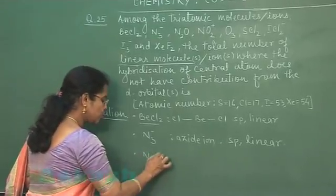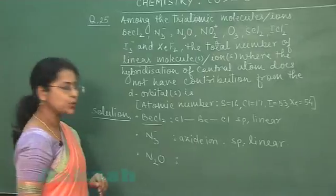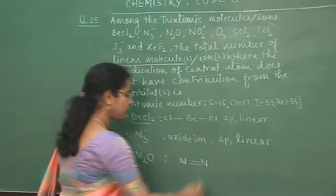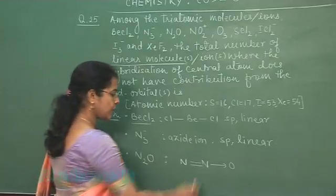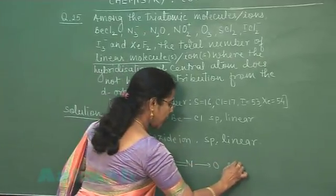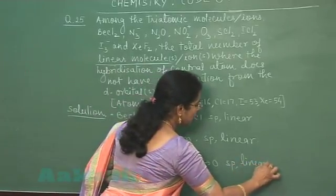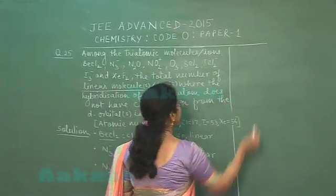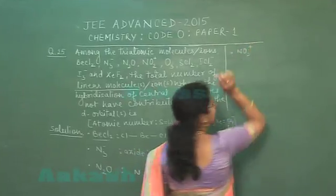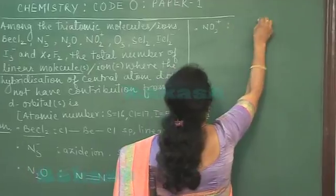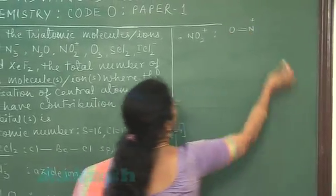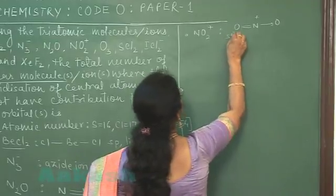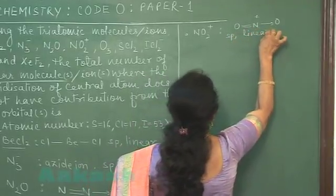The third one is N2O, an oxide of nitrogen. The central nitrogen atom is bonded to another nitrogen through a double bond and to oxygen through a coordinate bond. The central nitrogen is sp hybridized and the molecular shape is linear. The next one is NO2 positive, the nitronium ion. Nitrogen is bonded to one oxygen through a double bond and another oxygen through a coordinate bond. The central atom is sp hybridized and the molecular shape is linear.